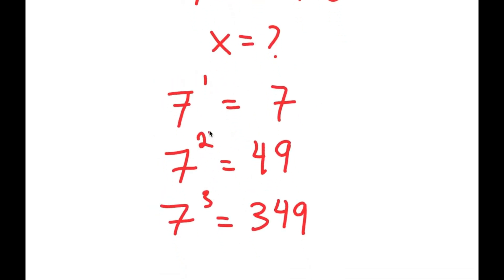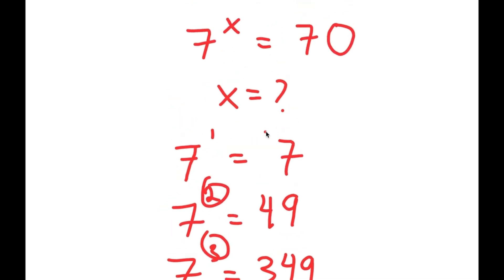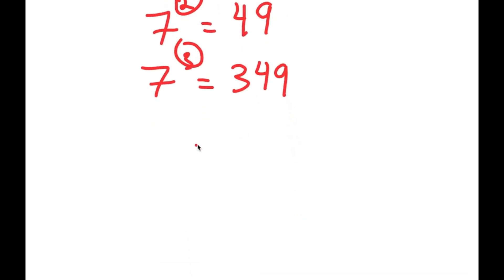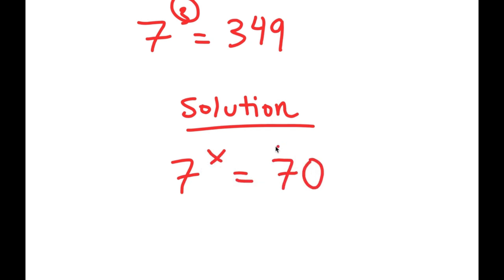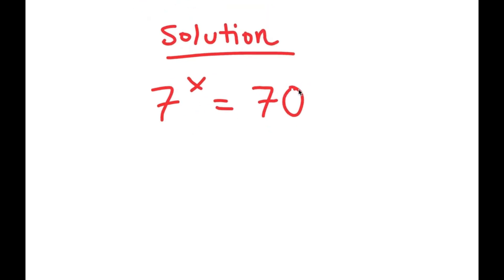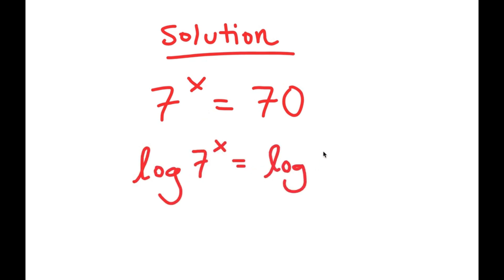So now to actually solve for x, my equation is 7 to the power of x is equal to 70. What I recommend doing for any exponential equation such as this is taking the log on both sides.